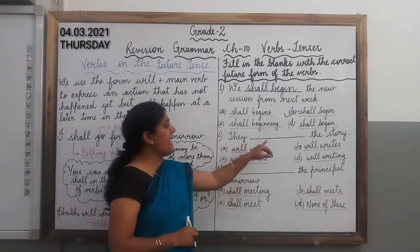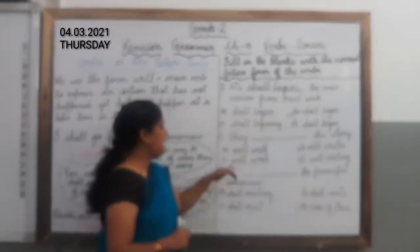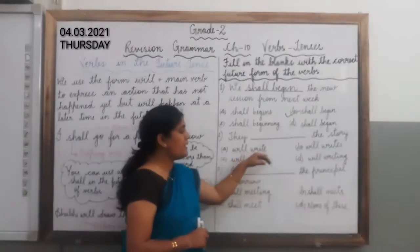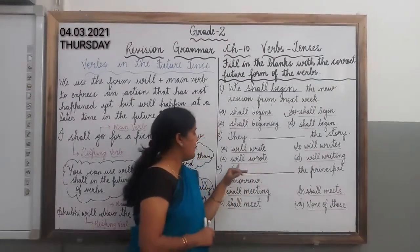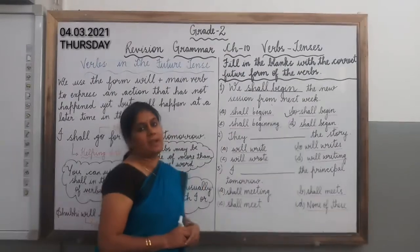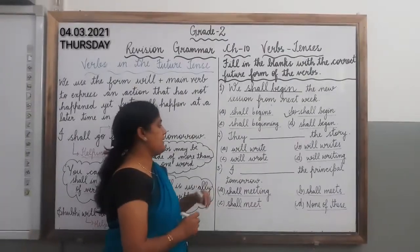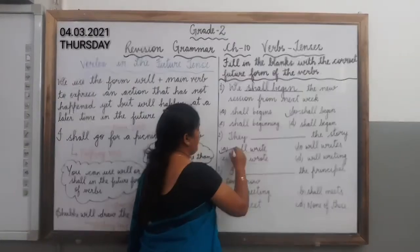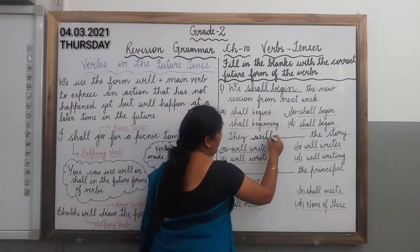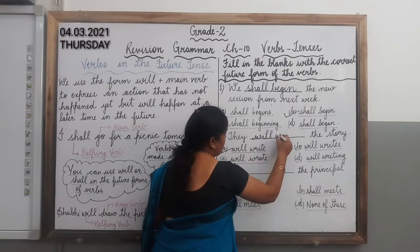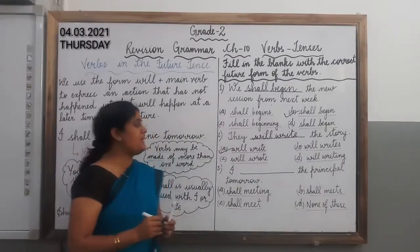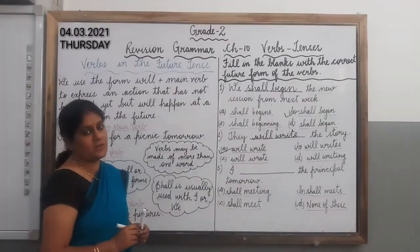The second question is: 'They ___ the story.' The options are: (A) will write, (B) will write, (C) will wrote, (D) will write in. The correct answer is option A — 'will write'. So the complete sentence is: 'They will write the story.'